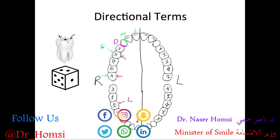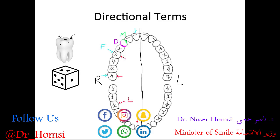We have one more surface to talk about: the surface that you're biting and chewing with. That surface is called the occlusal surface — O for occlusal. So those are the five tooth surfaces: facial, lingual, mesial, distal, and occlusal.